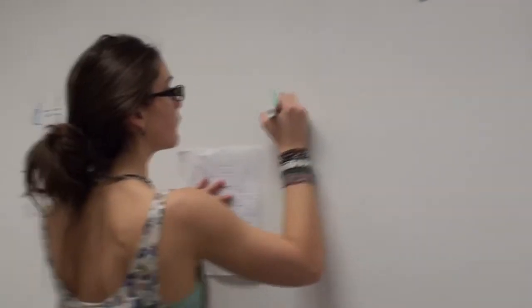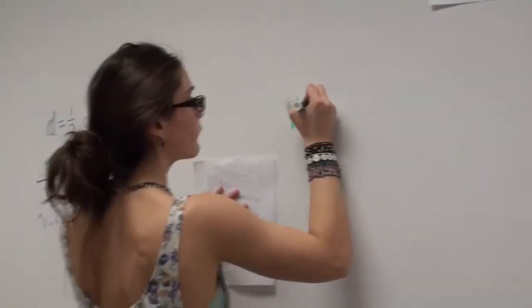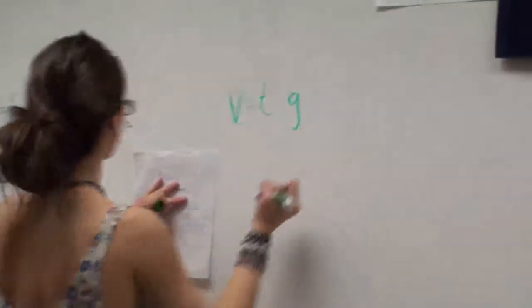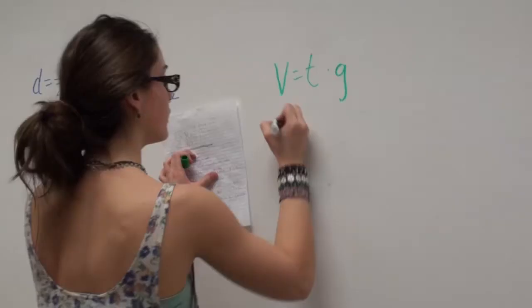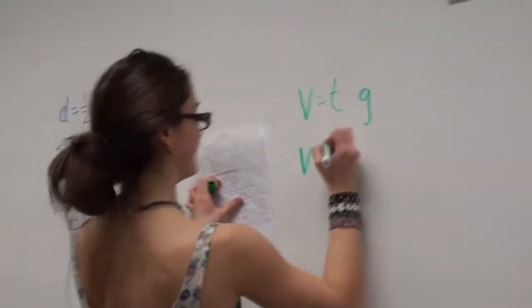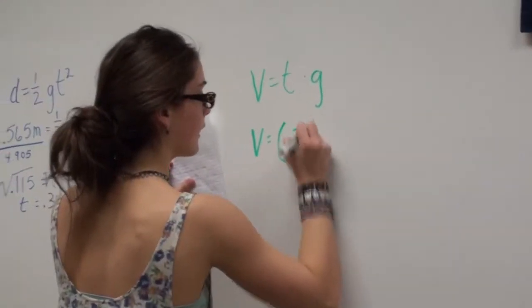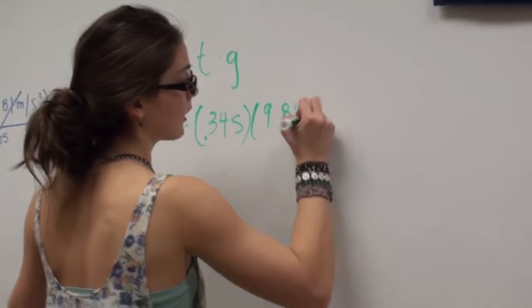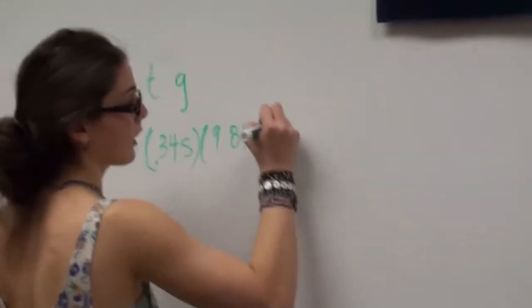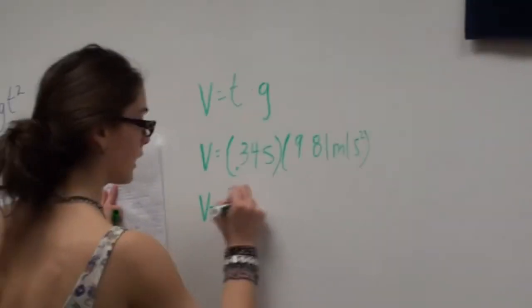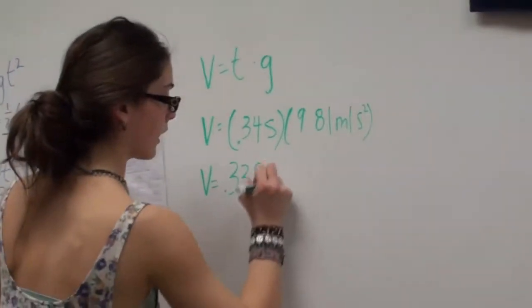Now that we know the time, we can determine the velocity at each point. We used the formula v equals g times t. We inserted 9.8 in for g and inserted the specific times we found at each checkpoint in order to solve for the velocity.